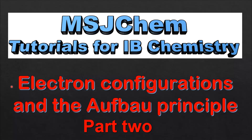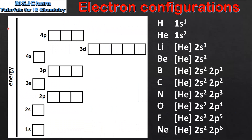This is MSJChem. In this video I'll be looking at electron configurations and the Aufbau Principle. As we look at each electron configuration we're going to fill the atomic orbitals with electrons. As a reminder, an atomic orbital can only hold two electrons and they must have opposite spins, and we use single-headed arrows to represent electrons.